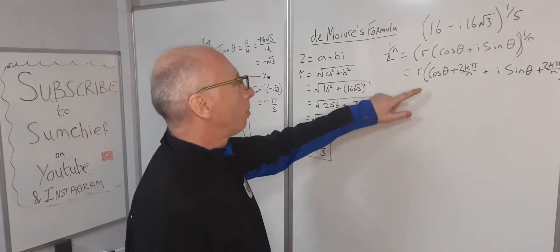For k = 1: we get 2·cos(−π/3 + 2π/5). Finding a common denominator of 15 gives us (−5 + 6)/15 = π/15. So the solution is 2·(cos(π/15) + i·sin(π/15)).